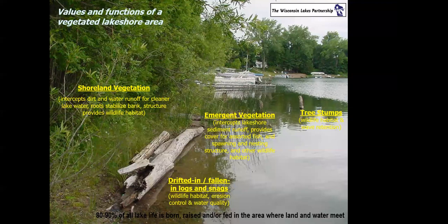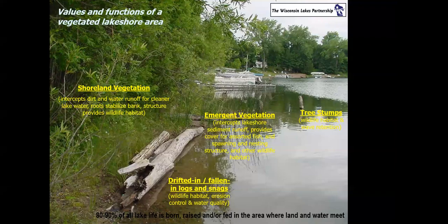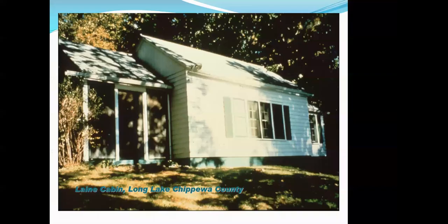Intact shorelines have three tiers of vegetation: trees, shrubs in the midsection, and a ground layer of sedges, wildflowers, ferns, and rushes. Unfortunately, over the years we've changed things up quite a bit.